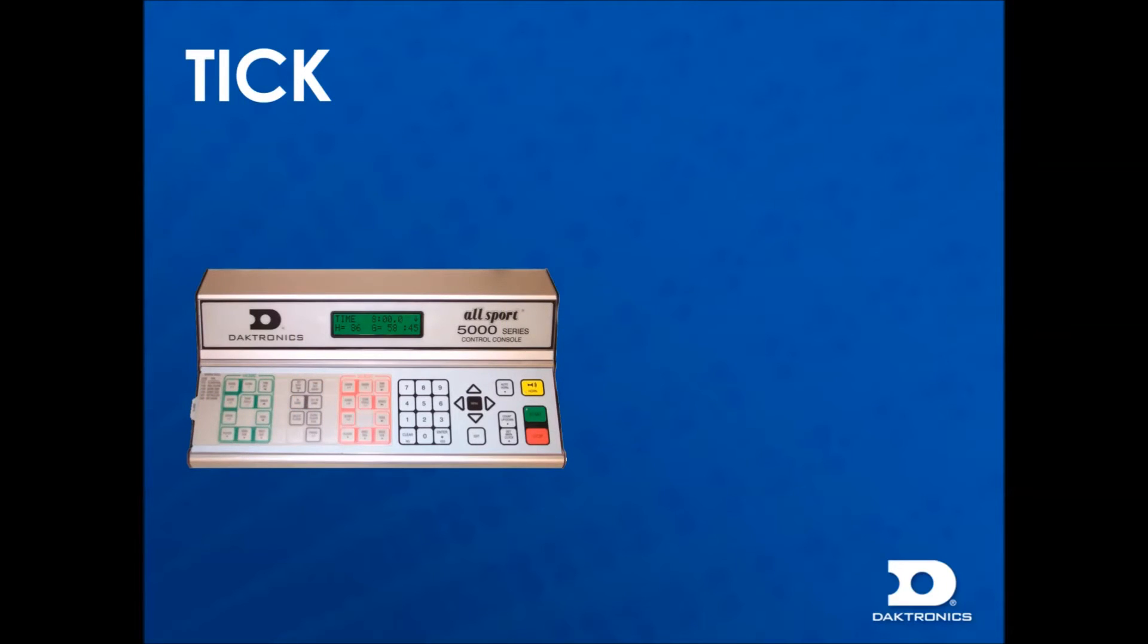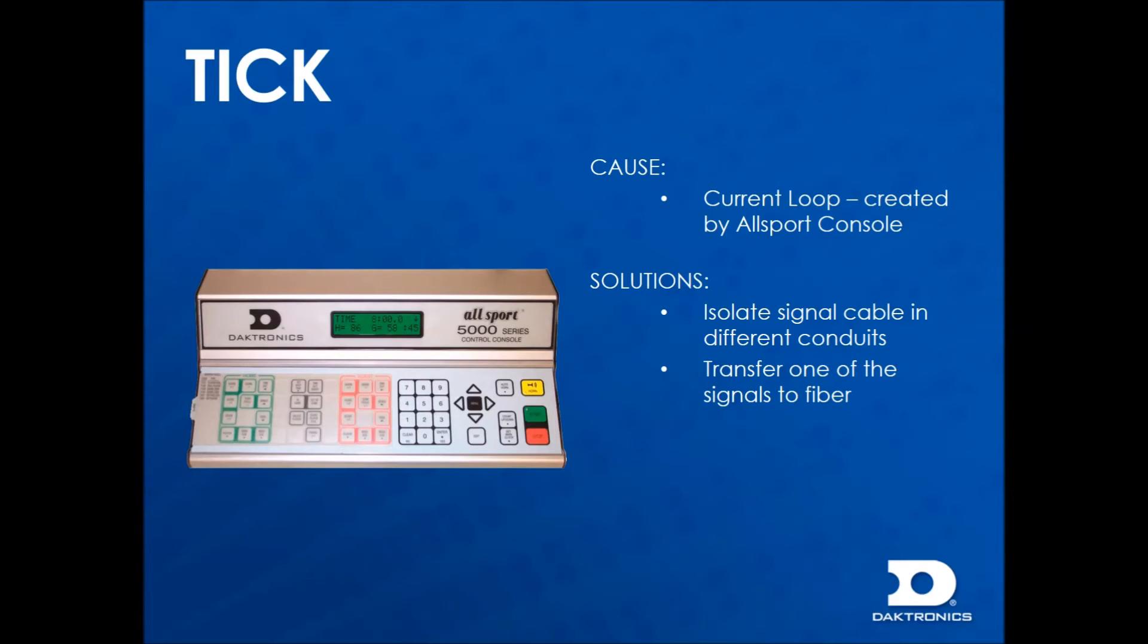Another common noise is the tick, demonstrated in the following clip. The tick is caused by the Allsport console signal. When this is run with the audio signal, it bleeds over into the audio signal, causing an audible tick. The solutions for the tick are to isolate the signal cable in different conduits or keep them separate, transfer one of the signals to fiber instead of analog, or run the Allsport wirelessly.